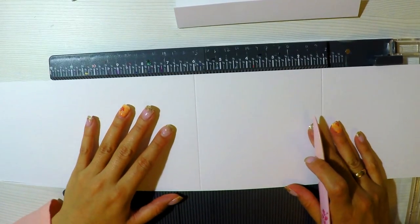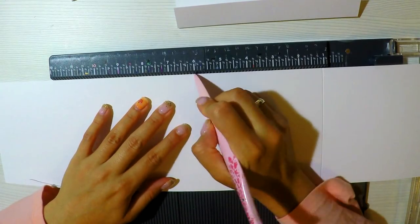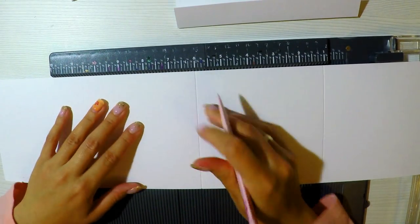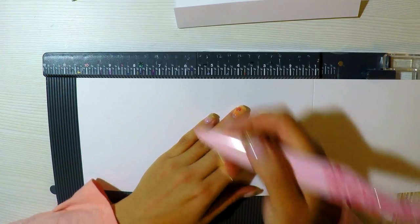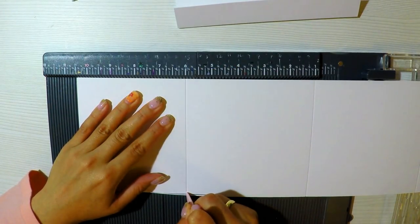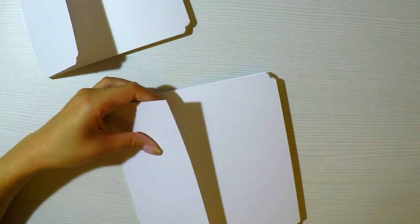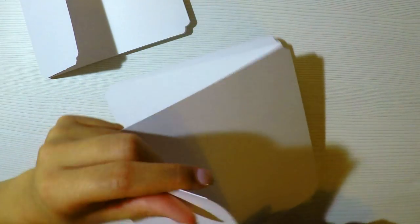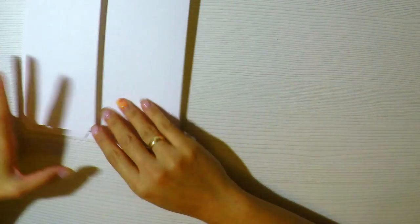En este caso yo tengo unas 5 pulgadas aproximadamente. Empiezo a plegar desde 1 pulgada hasta 6 pulgadas y así sucesivamente. Y voy a plegar 2 a lo largo y me tienen que quedar algo así como una especie de abanico. Un abanico que va a ser del tamaño de mi base de mi álbum.